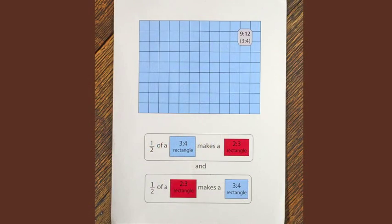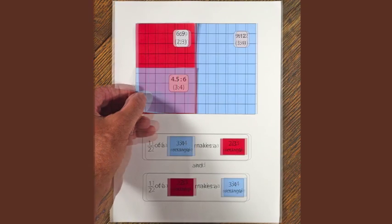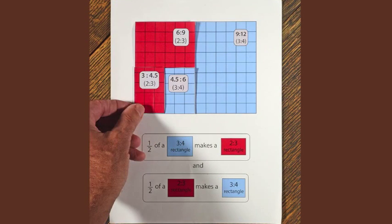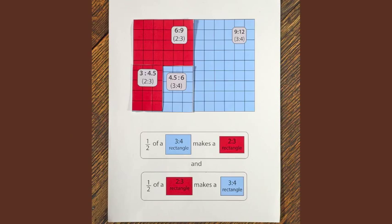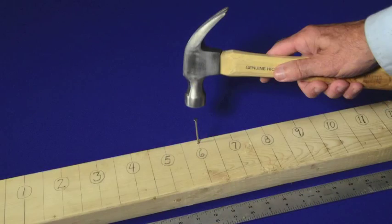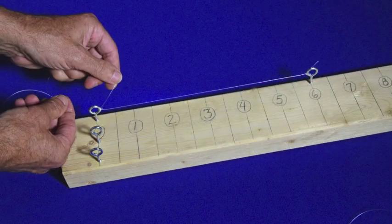To give you a hands-on sense of these special ratios, we'll solve four colorful puzzle boards like this one. To give your ears a sense of the ratios, we'll build a trichord, a simple three-stringed instrument.